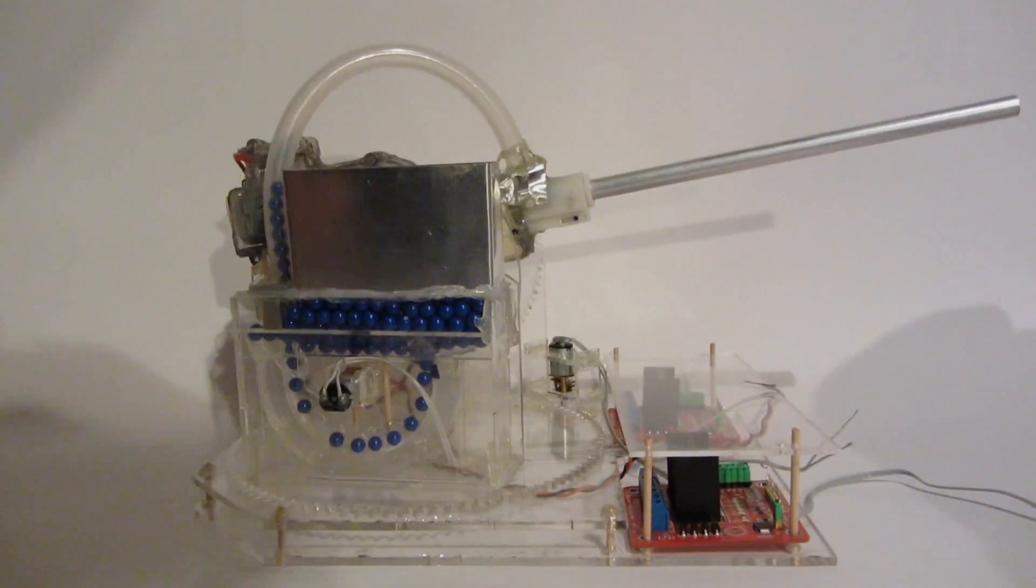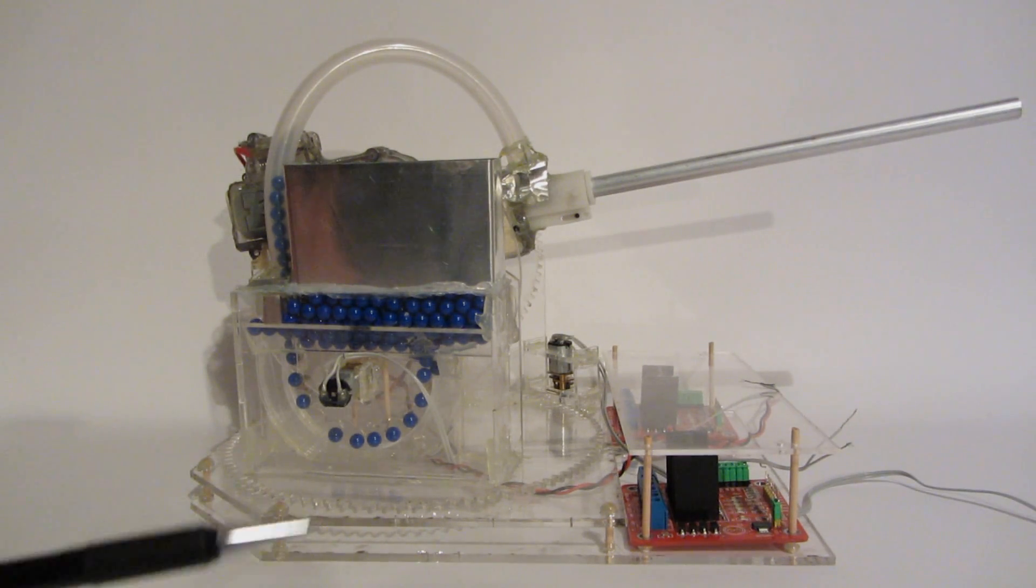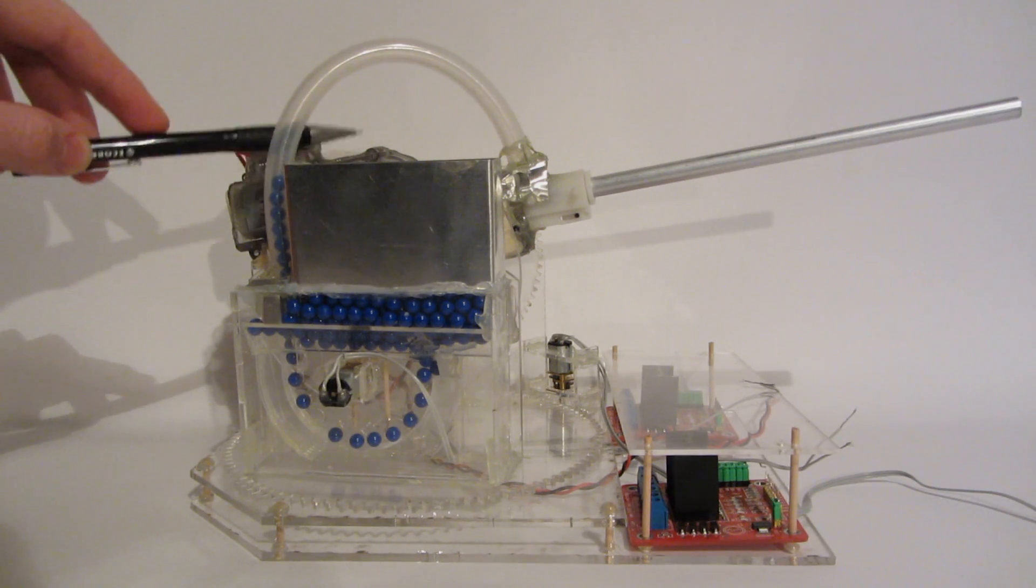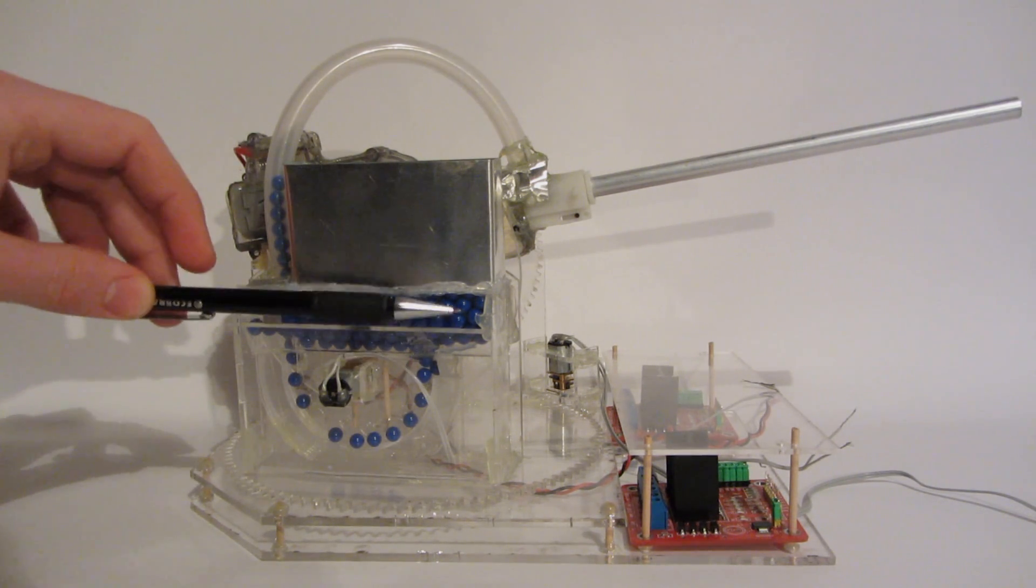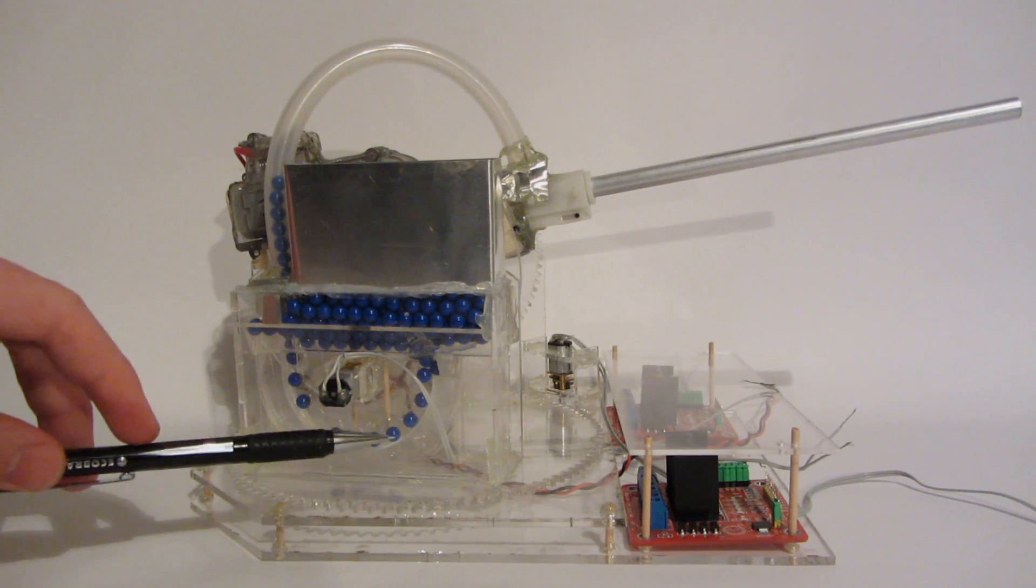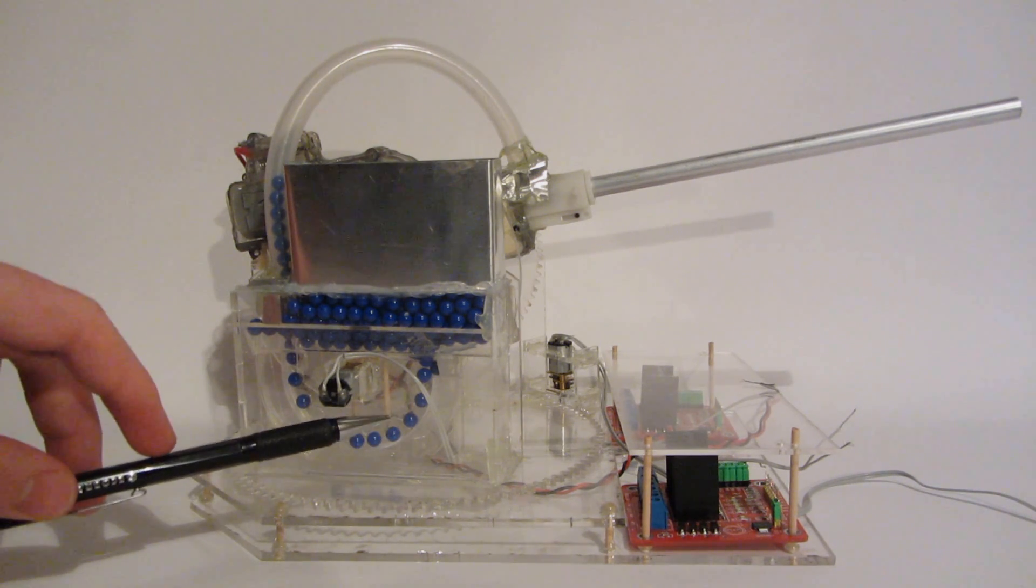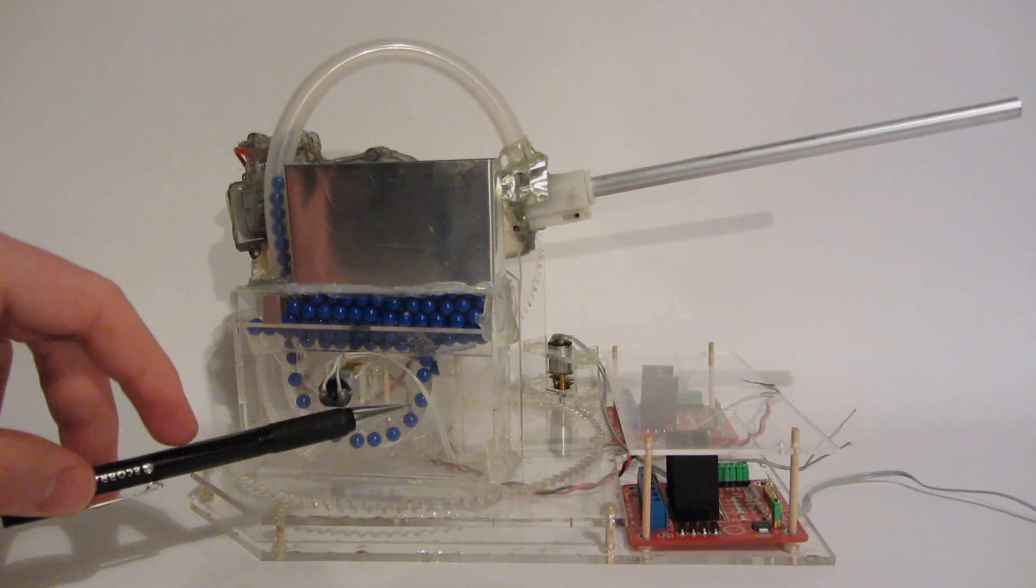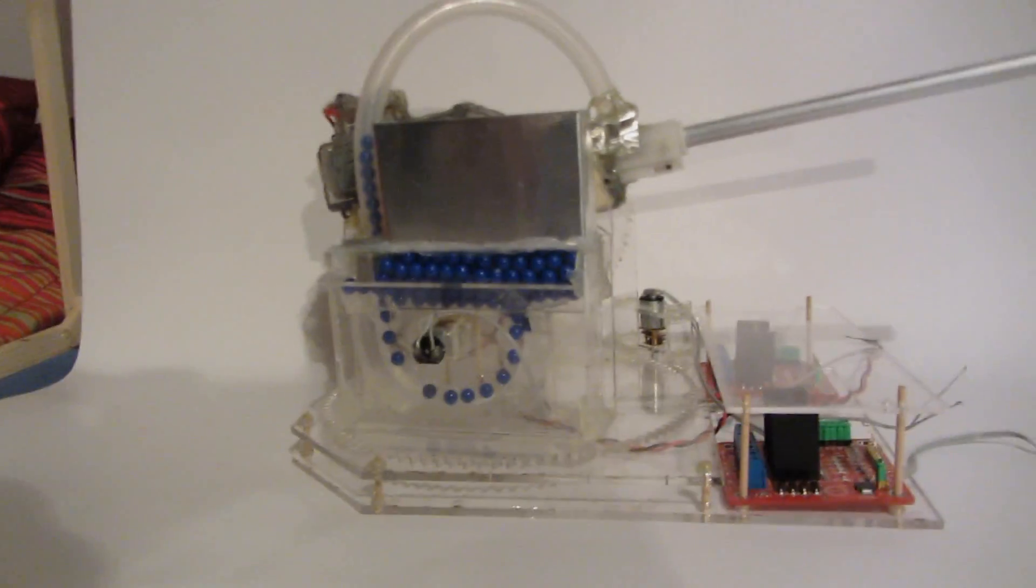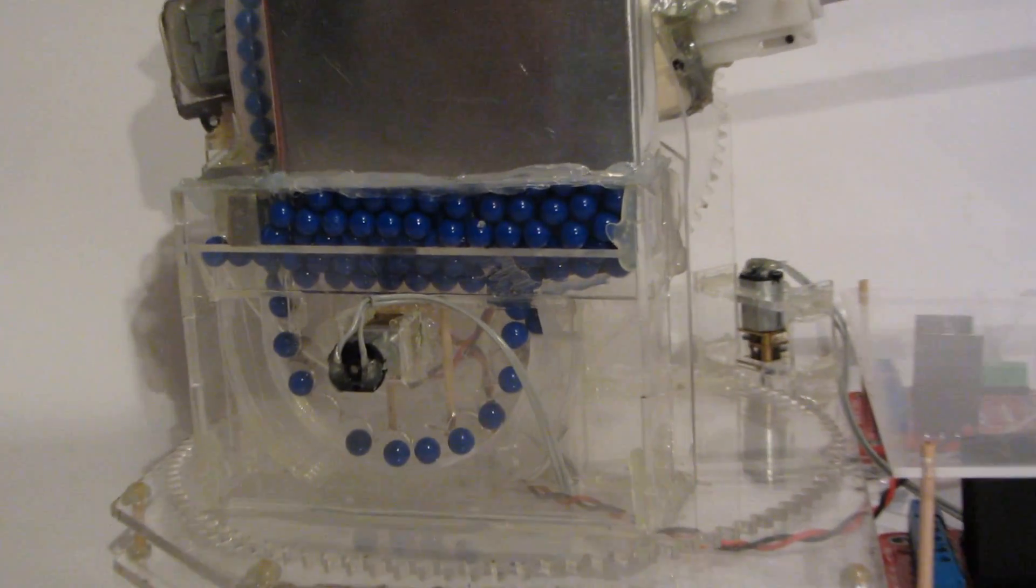We have an airsoft G36 gearbox here, a magazine for airsoft BBs, and this part is very special - this is the automated BB feeder. It works with a special laser-cut gear, and let me show you how it works.